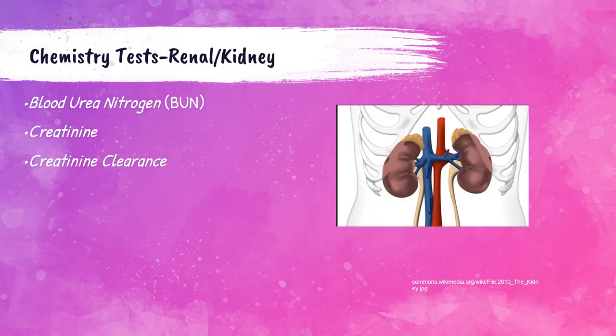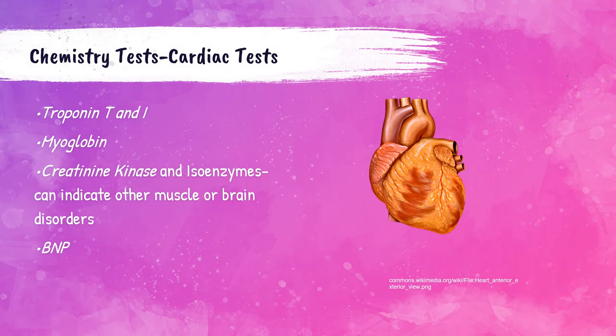Clinical chemistry tests that primarily assess kidney function are blood urea nitrogen (BUN), creatinine, and creatinine clearance. Tests that primarily assess heart function are troponin T and I, myoglobin, creatine kinase (CK) and its isoenzymes, and BNP. Creatine kinase and its isoenzymes can also indicate muscle or brain disorders, but CK is primarily associated with the heart.